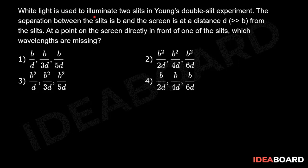White light is used to illuminate two slits in Young's double slit experiment. The separation between the slits is B and the screen is at a distance D, much greater than B, from the slits. At a point on the screen directly in front of one of the slits, which wavelengths are missing?